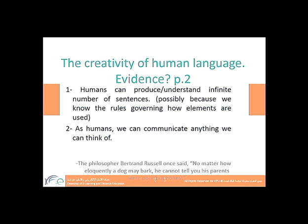Argument number two: as humans, we can communicate anything we can think of. Anything that crosses your mind, you can say it. You can argue, explain something, suggest, express your feelings using language — you can say whatever crosses your mind. This is really remarkable and creative, because not all living creatures can do that. Only humans can do it. Animals cannot do it — they have a limited number of communication systems, but not language. Language is specific to humans.